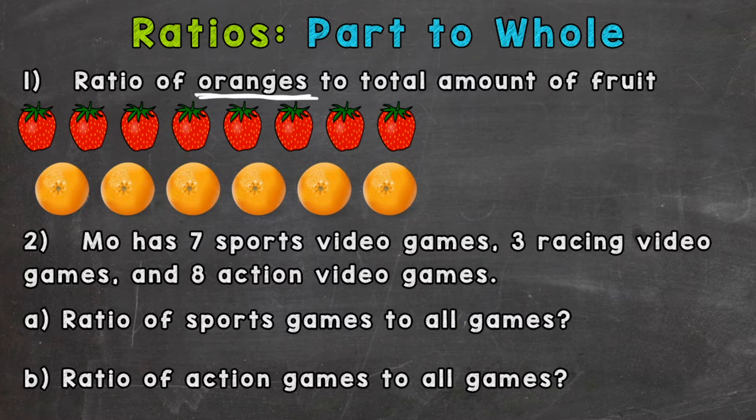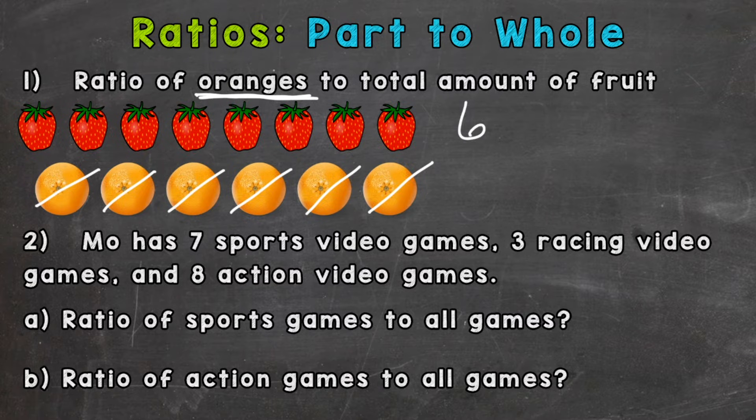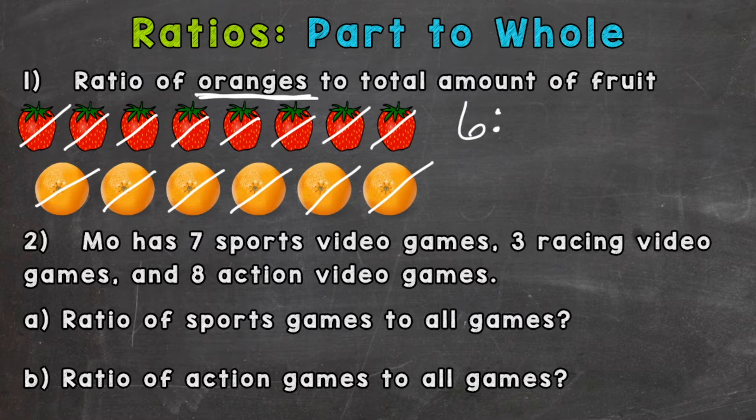There are 1, 2, 3, 4, 5, 6 oranges. Now we need the total amount of fruit. So if there are 6 oranges we need to see how many strawberries: 1, 2, 3, 4, 5, 6, 7, 8. So 8 strawberries plus the 6 oranges, so we have a total of 14 pieces of fruit in that entire group. So 6 oranges to the 14 pieces of fruit in the group.